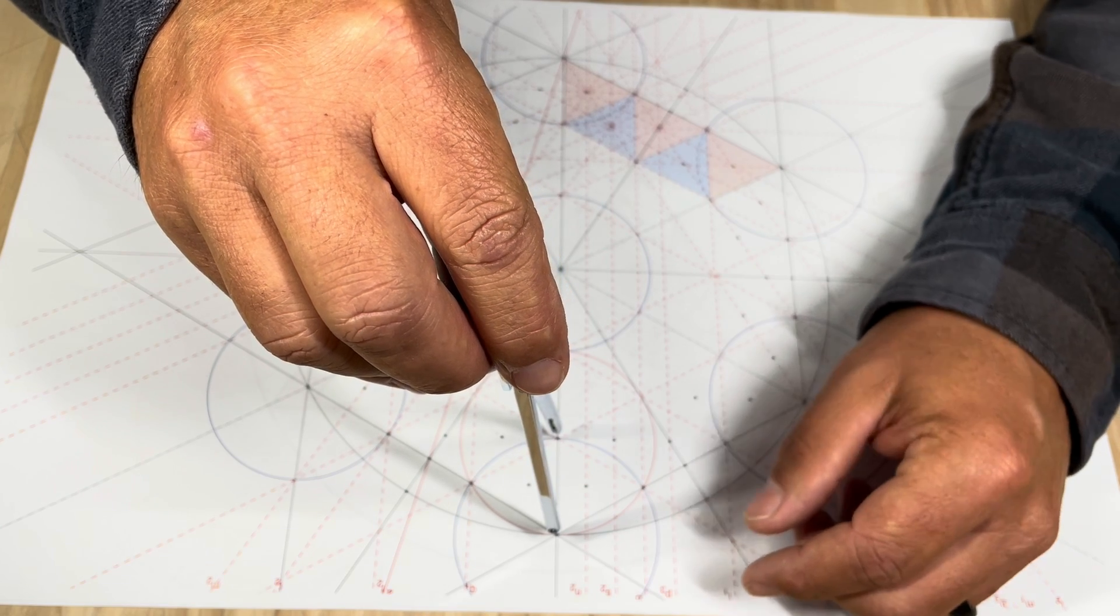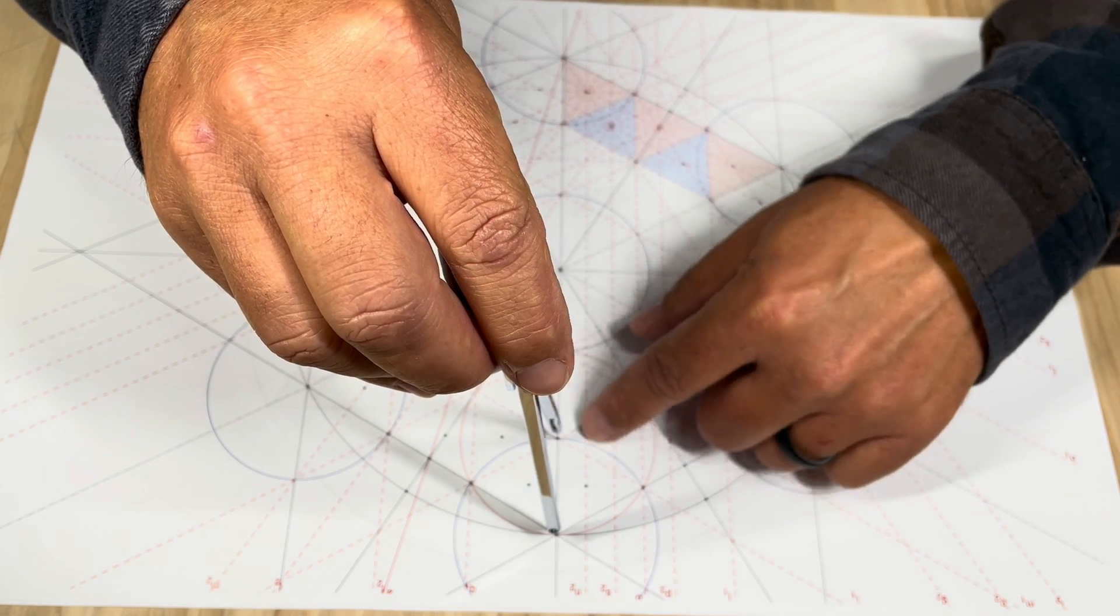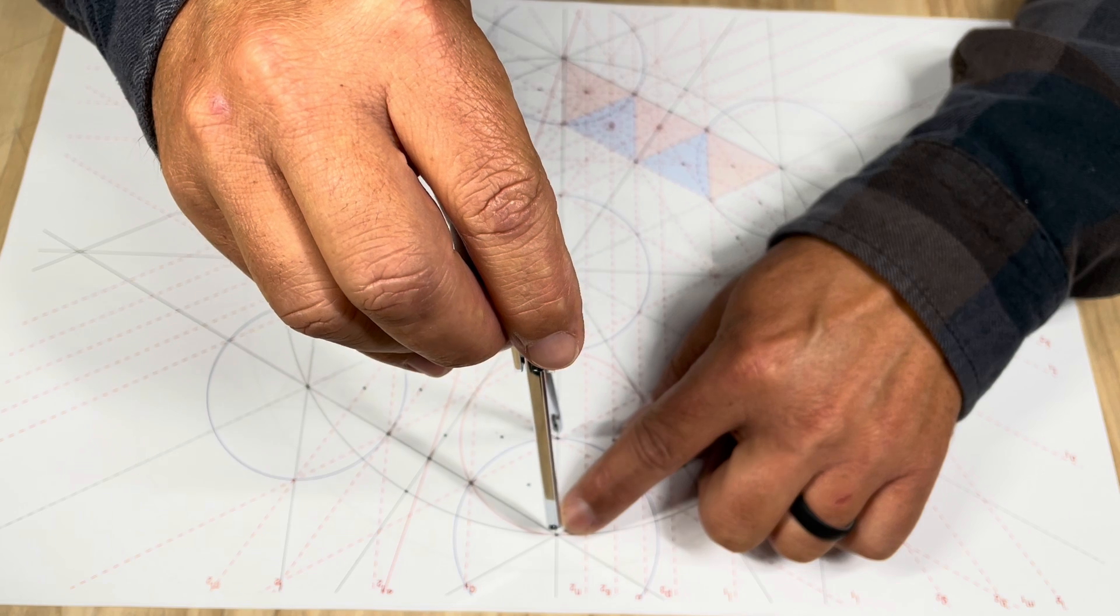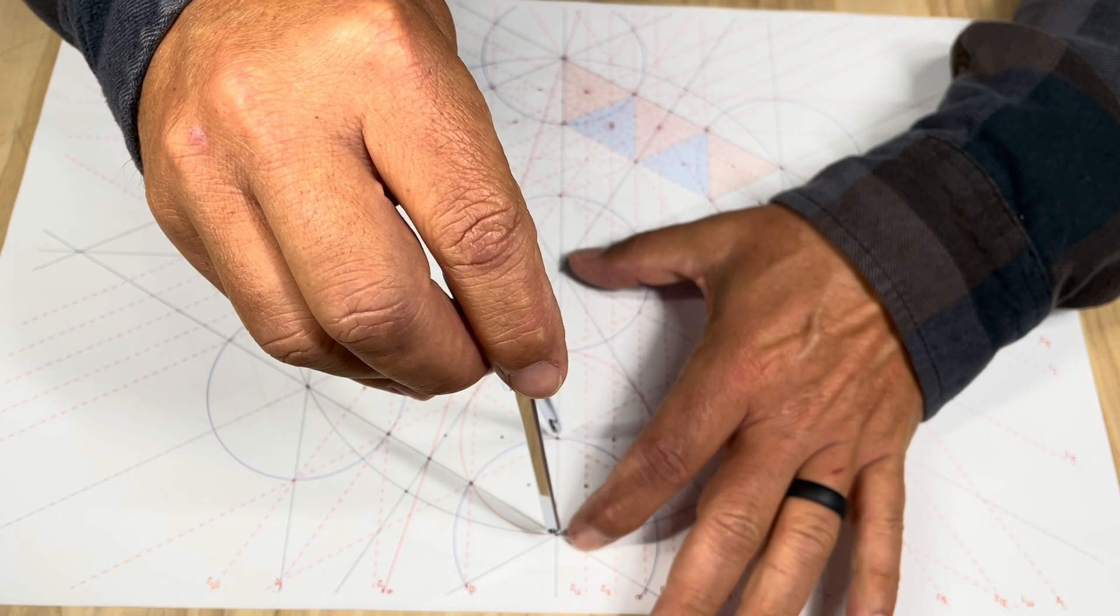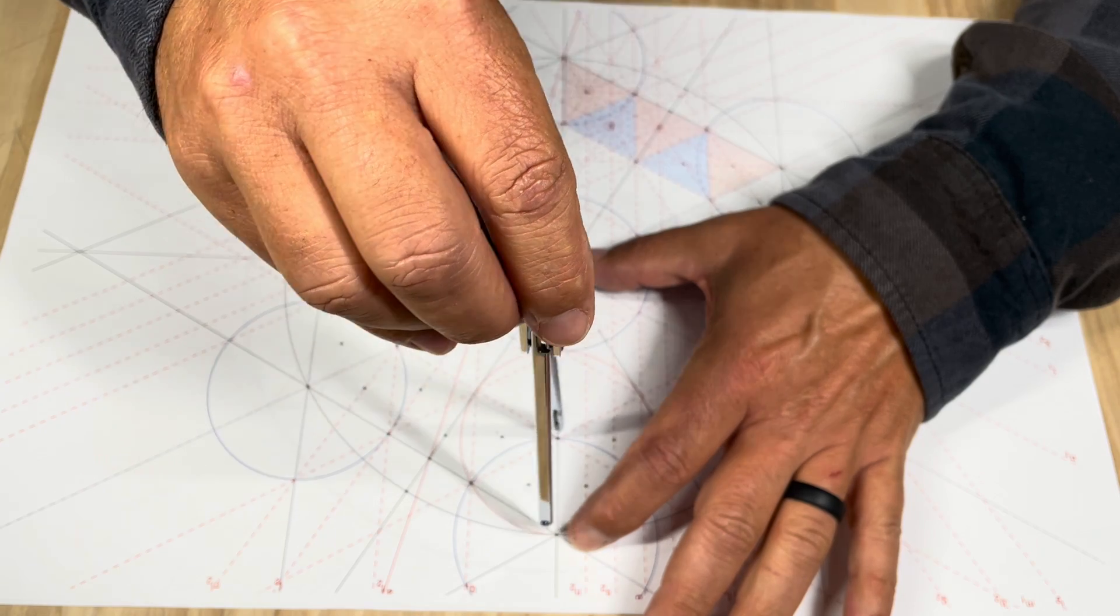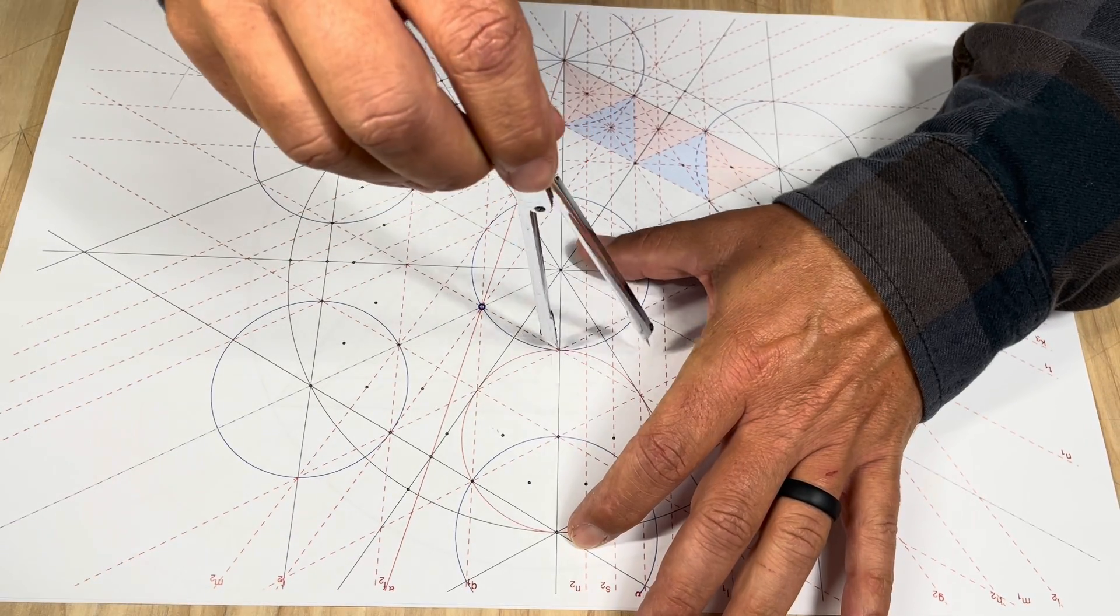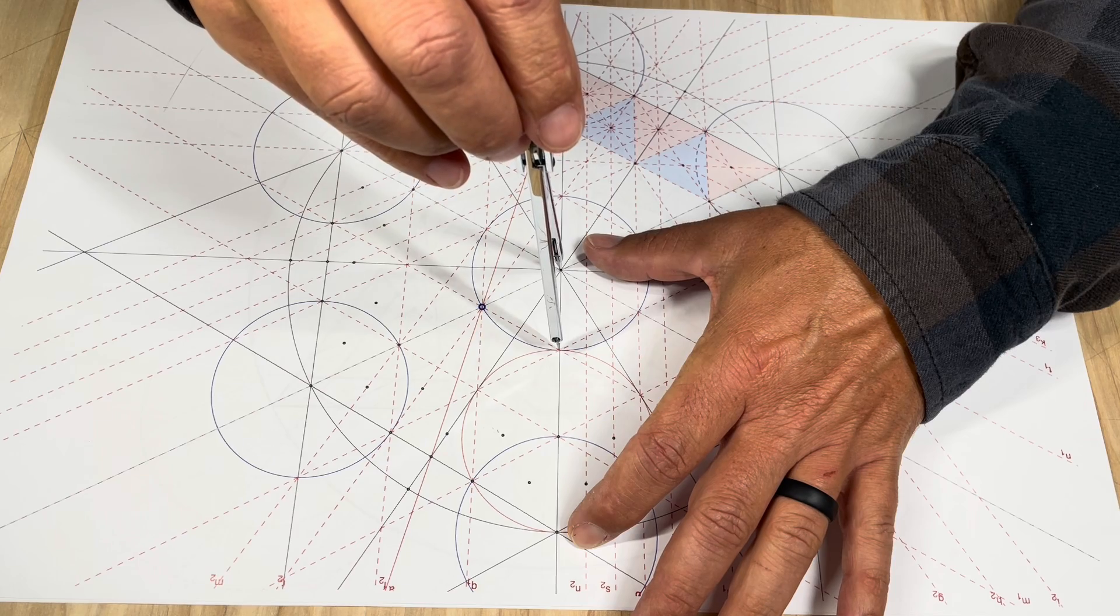Once you get that to where you can swing that around two times and get to that point precisely, you know you've divided that distance exactly into three. There's no doubt about it. Whereas if you were to use a compass, you could do it accurately, but in my opinion it would be a little bit less accurate than using the divider.